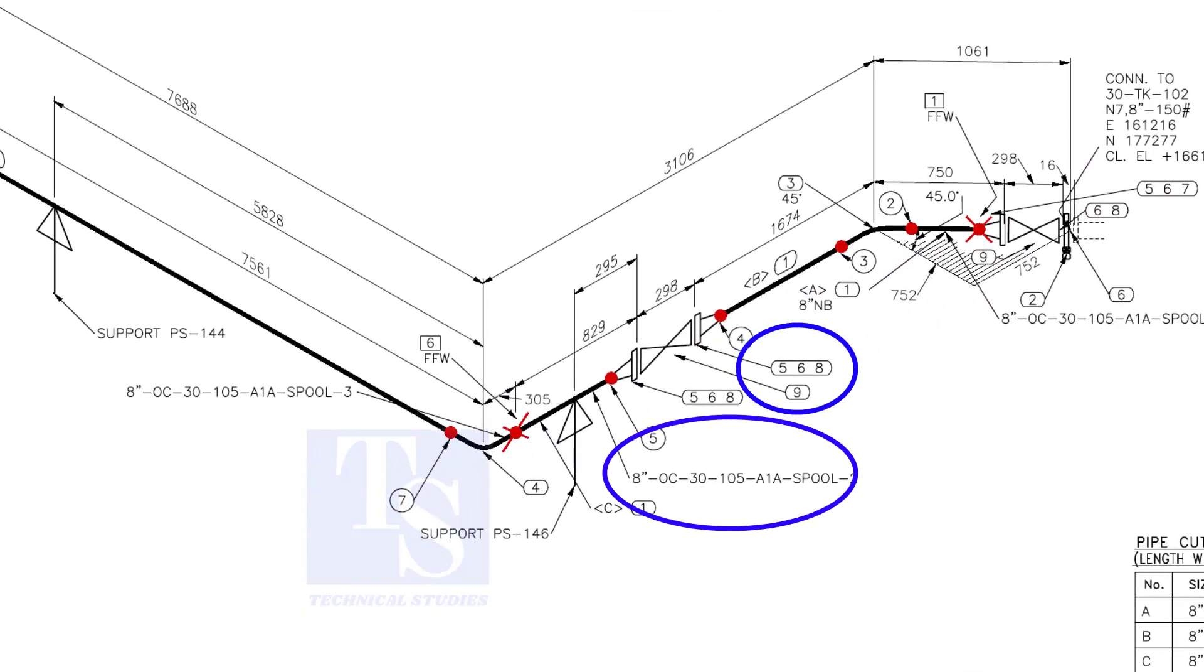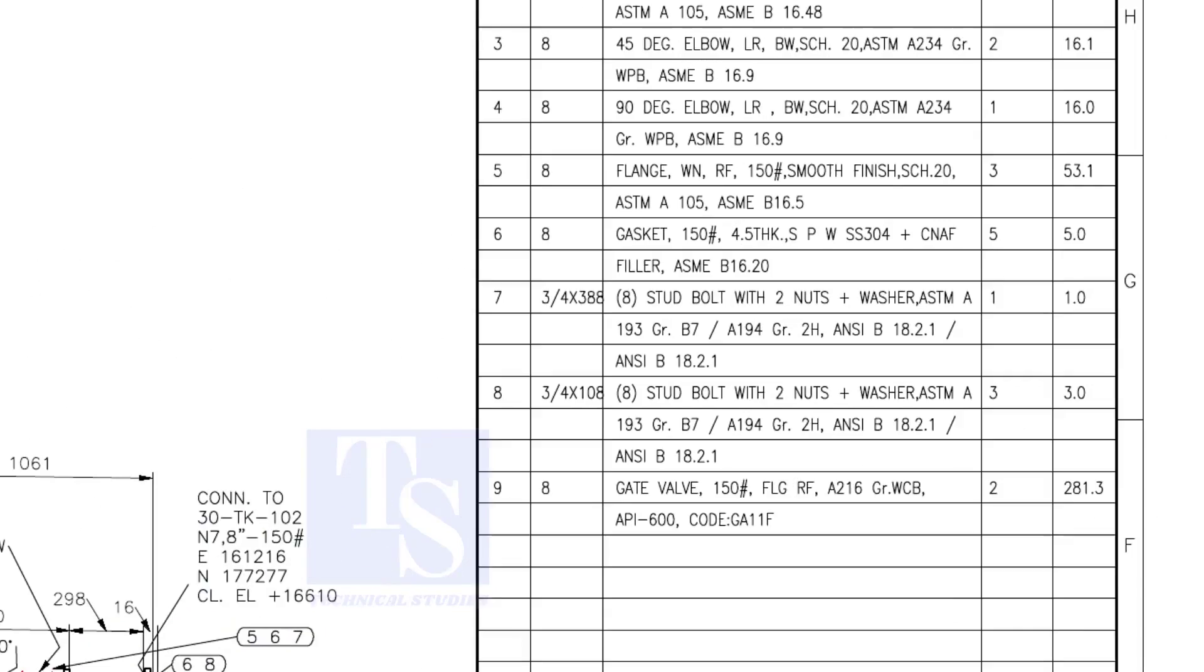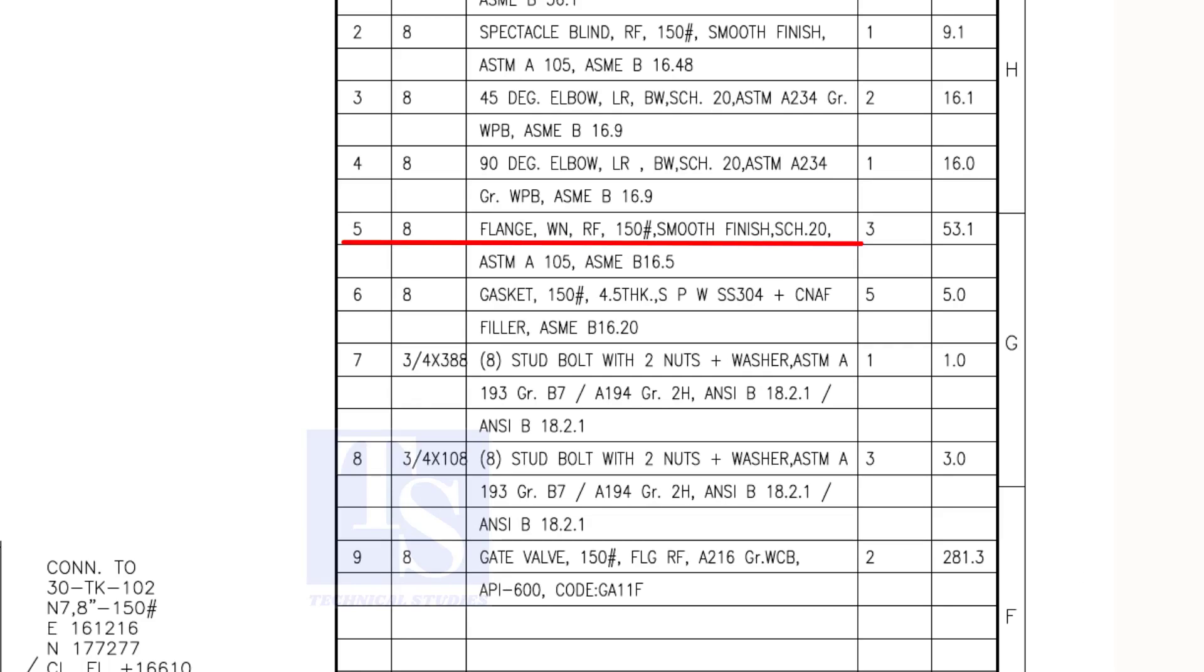In spool number 2, check what are items 5, 6, and 8. We already know item number 1 is pipe. Item number 5 is weld neck raised face flange, rating 150 pound. Item number 6 is spiral wound gasket and item number 8 is stud bolts. Both these items are not relevant for prefabrication unless the pipe length is not affected.